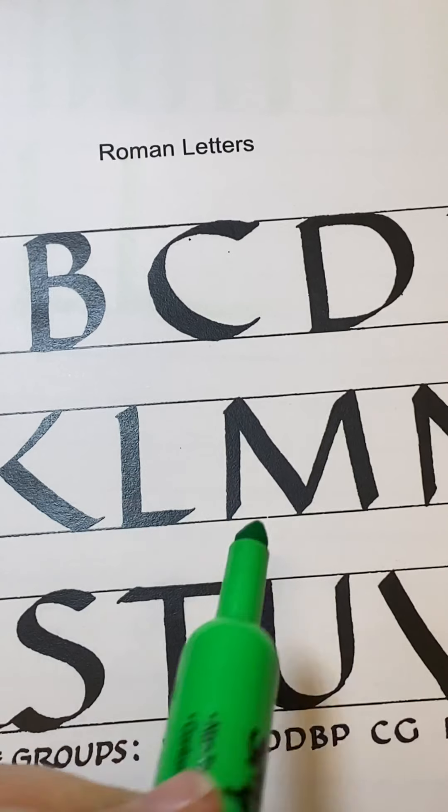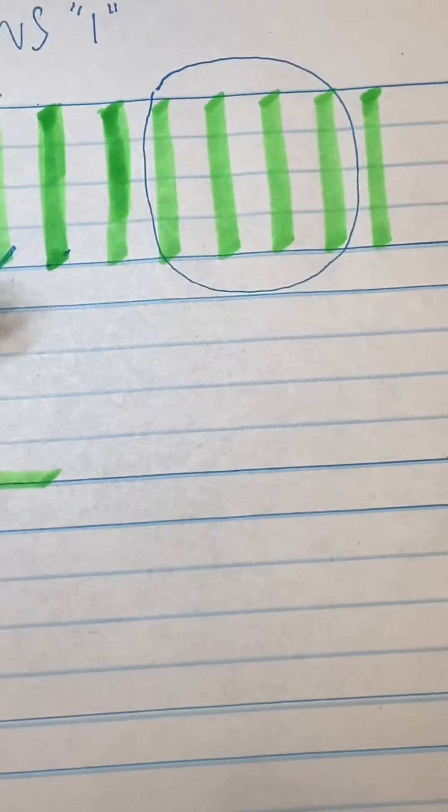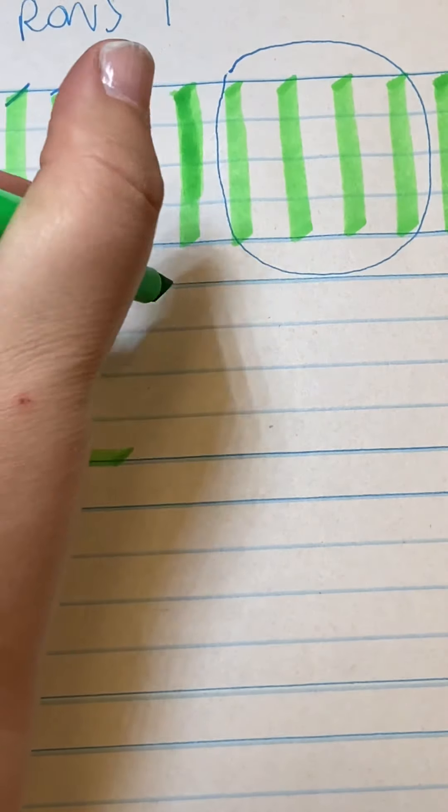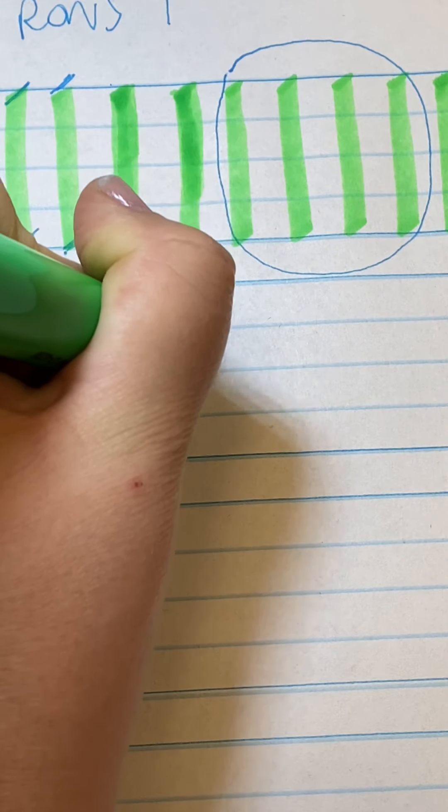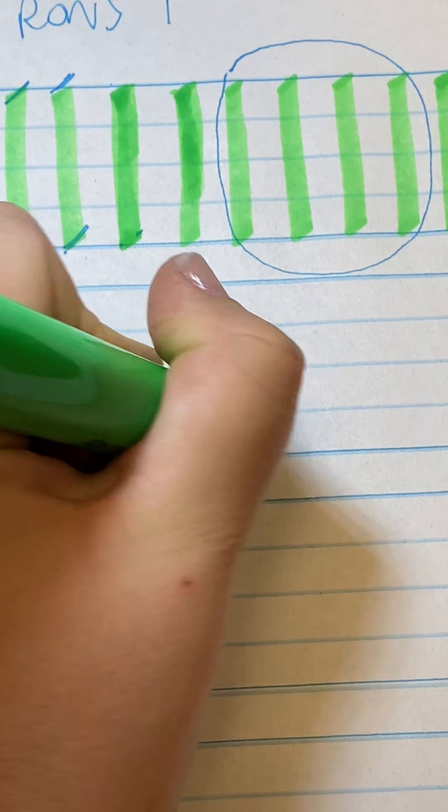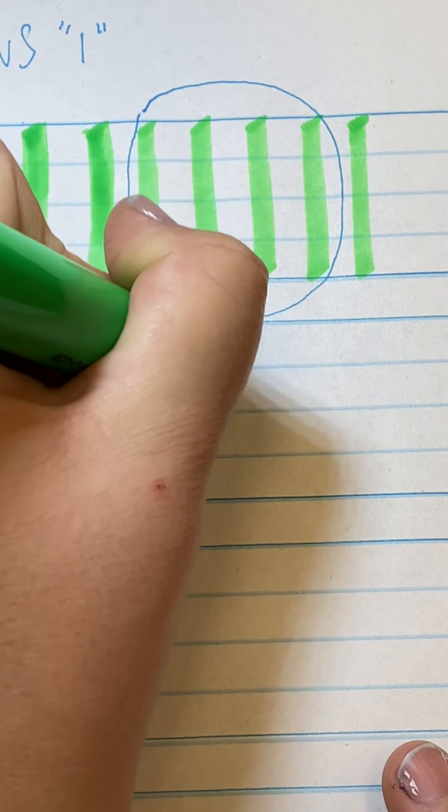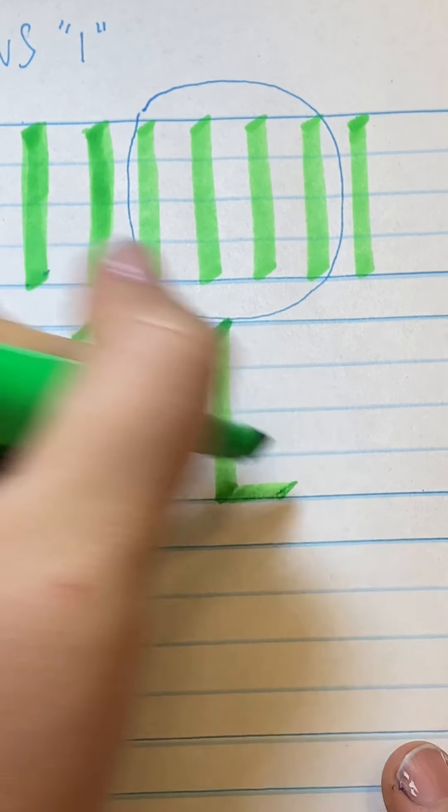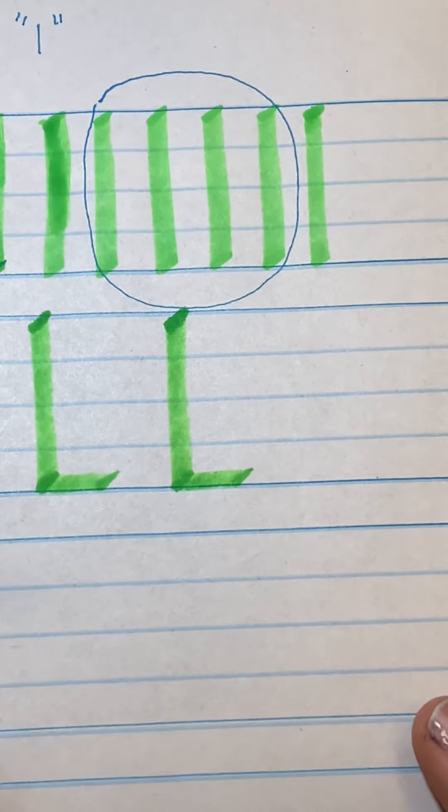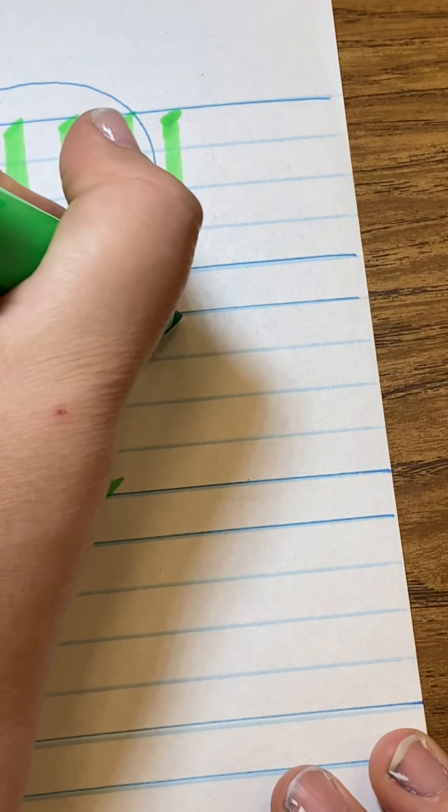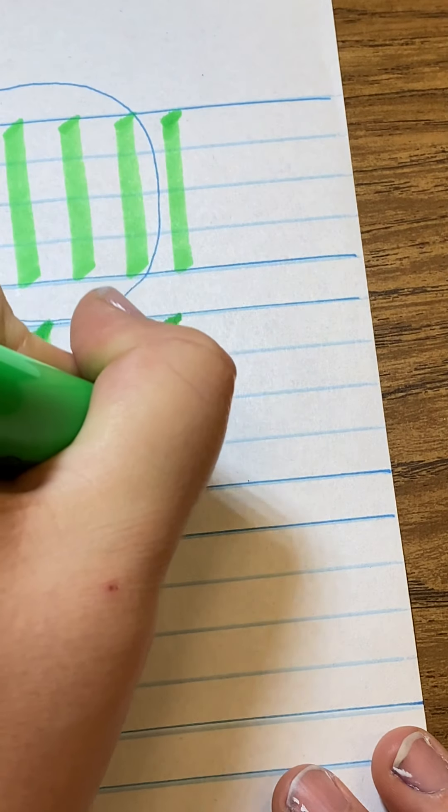45 degree angle the whole time for every letter, and make sure you're not tipping over. These are tall, powerful letters. The Roman alphabet is a symbol for power. The Roman numerals are a symbol of power.